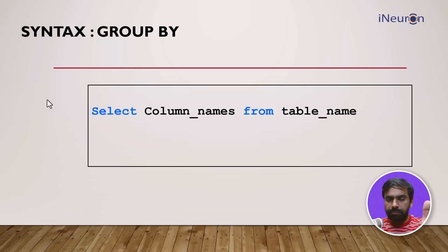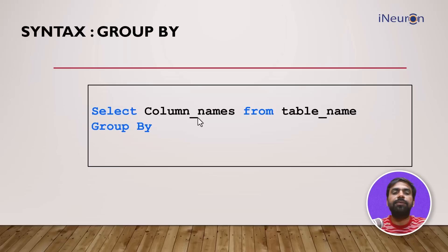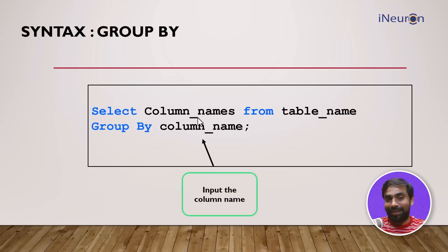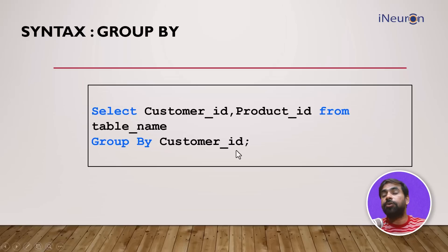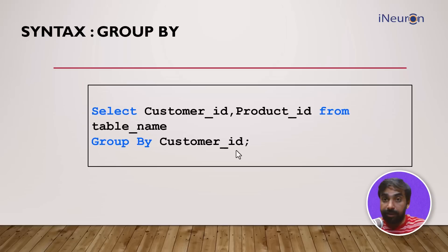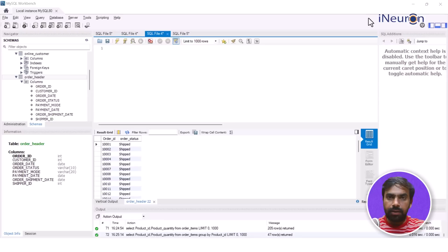The syntax is simple: SELECT column names FROM table name, and then GROUP BY one of the column names specified in the SELECT. For example, if I want to group by customer ID, I'd write SELECT customer_id, product_id FROM customers GROUP BY customer_id. This groups all data by every customer — so if a customer has purchased an item multiple times, GROUP BY lets me see how many transactions that customer has done over a given period.